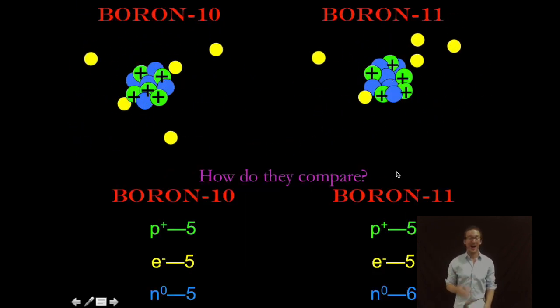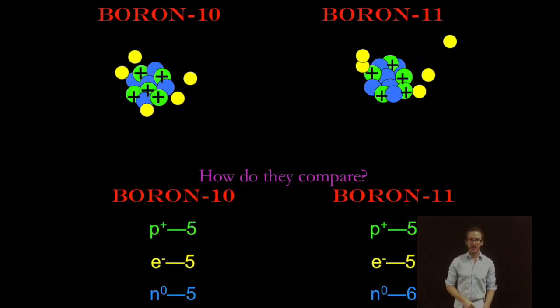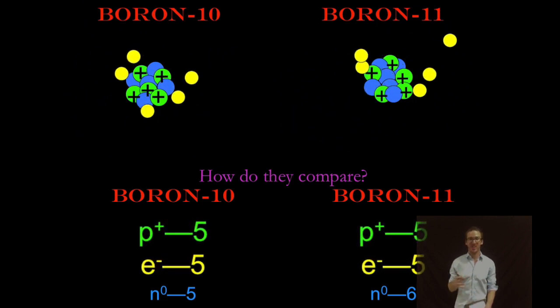Okay so you look at these two isotopes of boron again they have different masses but note that each of them are electrically neutral because they have the same number of protons as electrons.